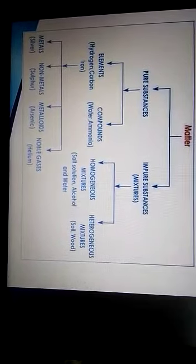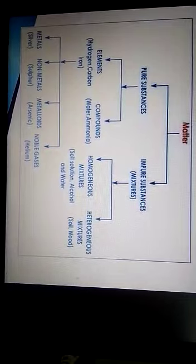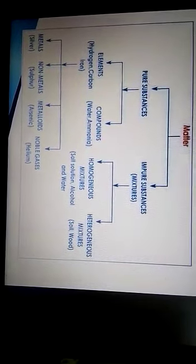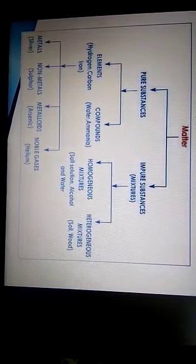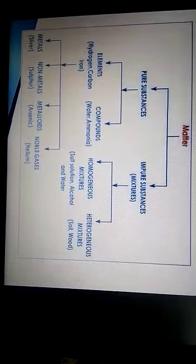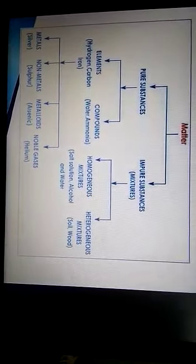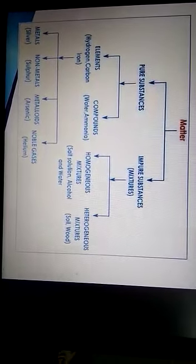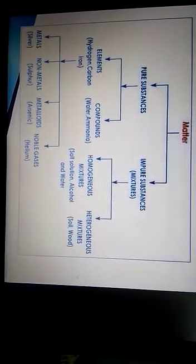Elements classified into metals, non-metals, metalloids, and noble gases. Metals like silver, gold, iron. Non-metals: sulfur, zinc, calcium. Metalloids: arsenic, mercury. Noble gases: helium, lithium — that is zero group elements, zero group inert gases.